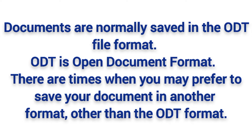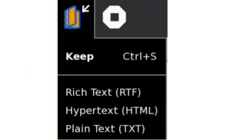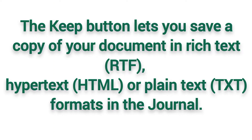Documents are normally saved in ODT file format. ODT stands for Open Document Format. There are times when you may prefer to save your document in another format other than ODT. To do this, you use the Keep button, as you can see on this side. The Keep button lets you save a copy of your document in rich text (RTF), hypertext (HTML), or plain text (TXT).